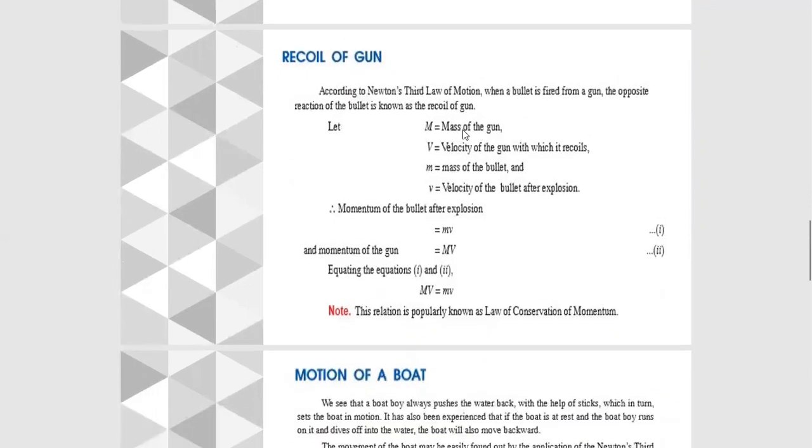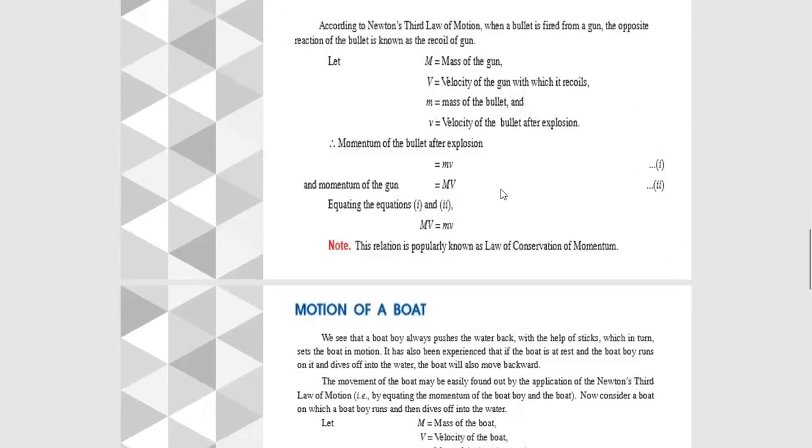Let M = mass of gun, V = velocity of gun which recoils, m = mass of bullet, and v = velocity of bullet after explosion. So momentum of bullet after explosion is mv.